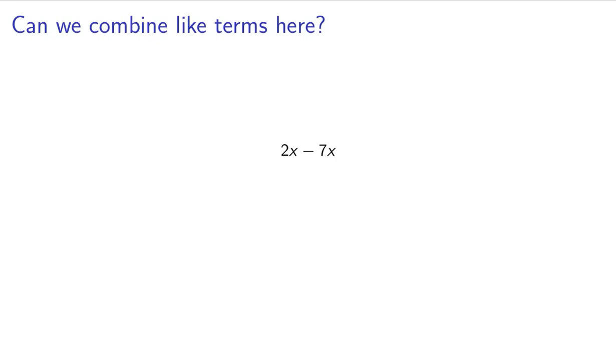Now, can we combine like terms here? Actually, yes, we can because you have 2x minus 7x. You have an x here and an x here, so it just becomes negative 5x.